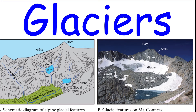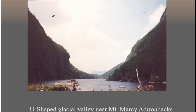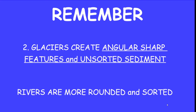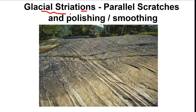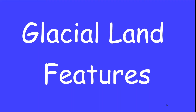On to glaciers. There are really only two major things to know. First, they create U-shaped valleys as they move through canyons. They have generally unsorted sediment that is very angular — all randomized. Rivers are sorting mechanisms; they sort by size. Glaciers do not. As glaciers move across rocks, they cause striations — parallel scratch marks. It polishes and smooths the rock.